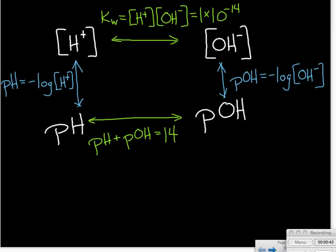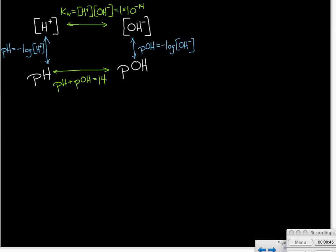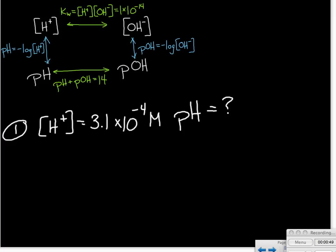So we'll be using that as our guide. Our first example problem—and at any time, if you want to pause this lesson and try to work these out on your own before you see the solution, by all means do so. So our first problem is we're given the hydrogen ion concentration of 3.1 times 10 to the minus 4th molar and we're asked to find the pH.